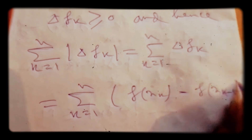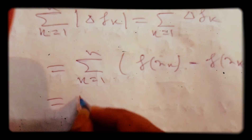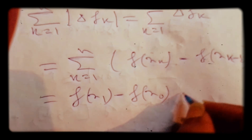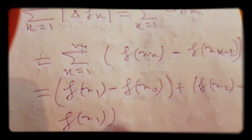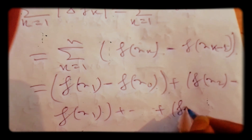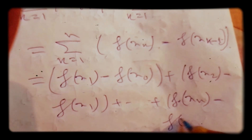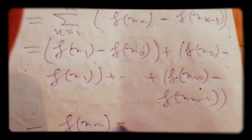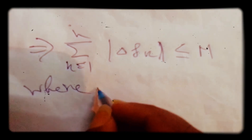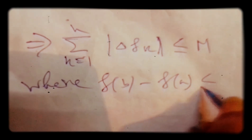Expanding this telescoping sum: f(x_1) - f(x_0) + f(x_2) - f(x_1) + ... and all intermediate terms cancel, finally giving f(x_n) - f(x_0) = f(b) - f(a). This implies summation from k = 1 to n of |delta f_k| is less than or equal to M, where we can take M = f(b) - f(a), which is bounded. Hence the proof.